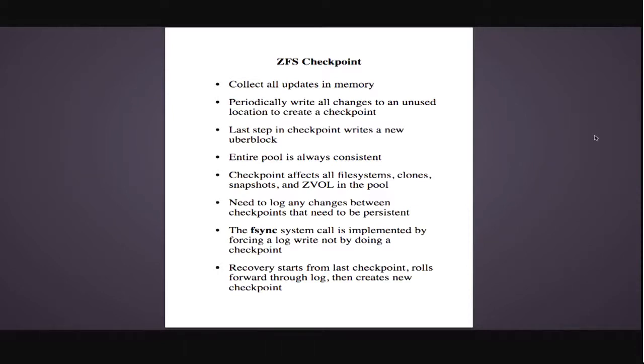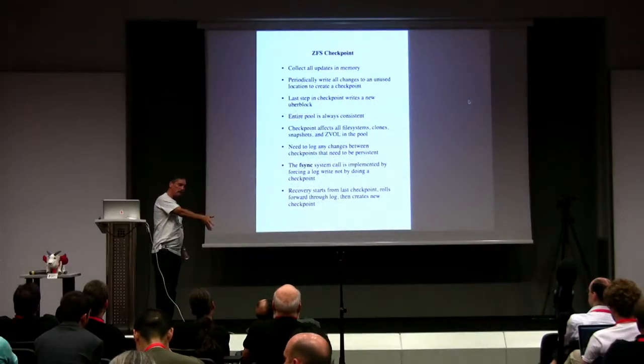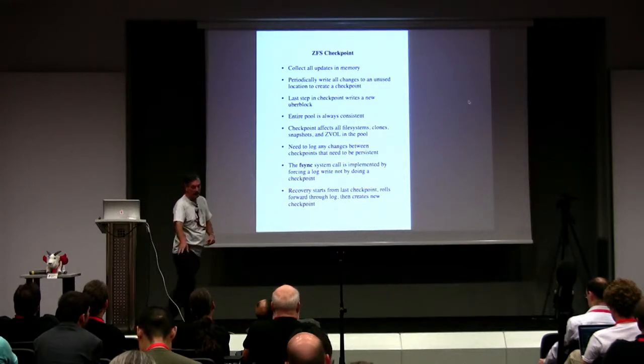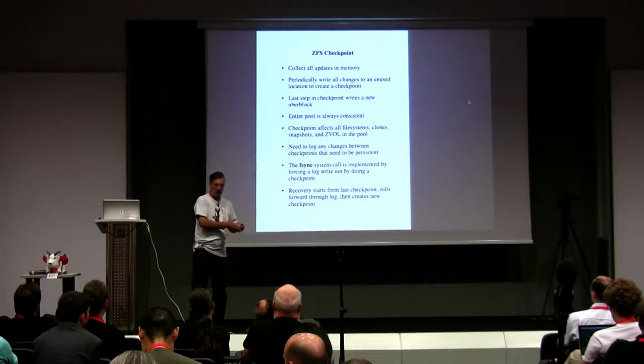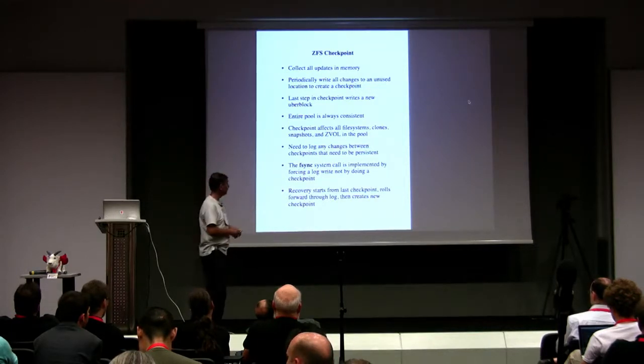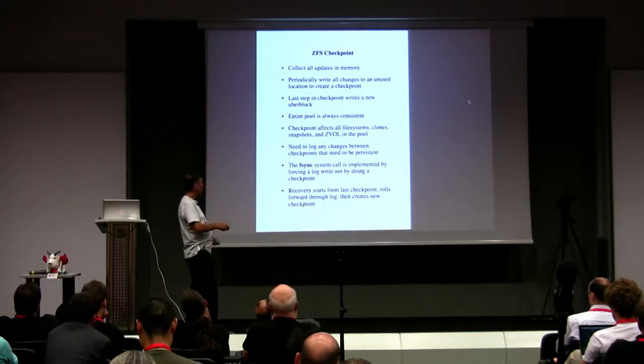Recovery starts from the last checkpoint. You find the uber block for the most recent checkpoint, you find the intent logs — there's one for every file system and every zvol — and then you just roll forward through the log. As you go through the log it's like: write this, do that, do these other things. It just builds up a whole bunch of stuff in memory, just like you would from normal operation. When you've got all that done, you do a checkpoint and say, okay, boom, we're now all caught up, and we can reset the logs because we're ready to move on.